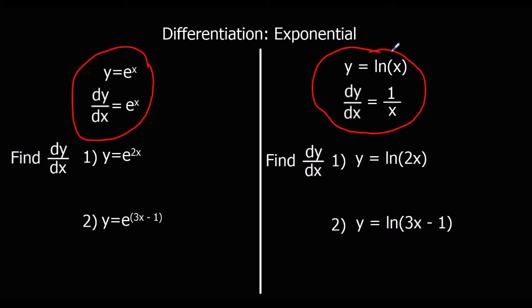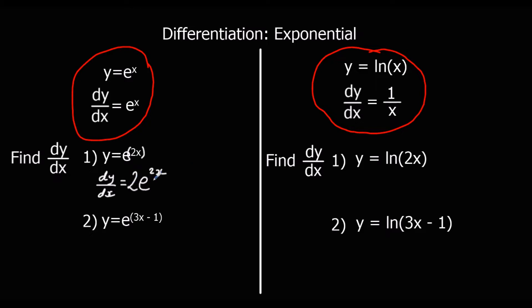These first questions are chain rule questions — we have a function within a function, so you can think of it as having a bracket. For y equals e to the power of x², differentiating it stays exactly the same, and we multiply by the bracket differentiated. So 2x differentiated is 2, and we times by 2. That's our answer.